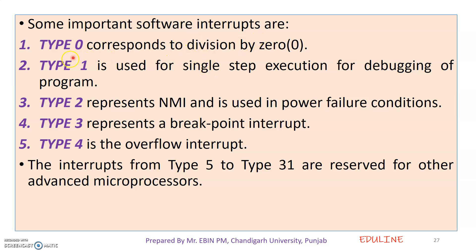Type 0 interrupts. Type 1 is used for single step execution, for debugging of a program. Type 2 is NMI — it represents non-maskable interrupts. Type 0 interrupt is used for a power failure.